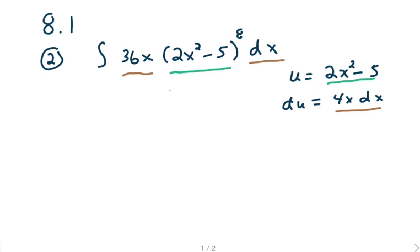Now u is often hiding inside of a parentheses. And in this problem, that's where it's at. If we let u equal 2x squared minus 5, the derivative of that is 4x dx.